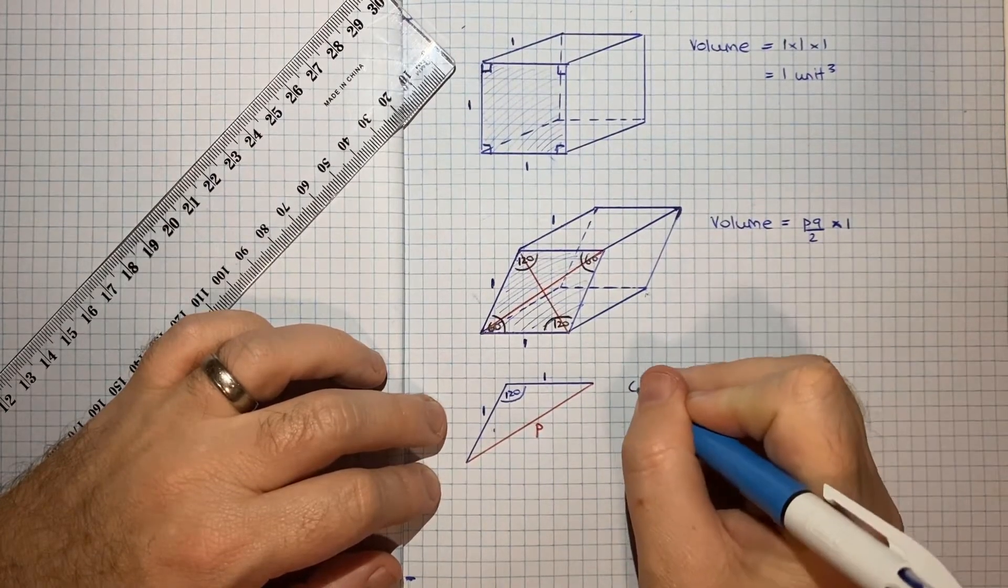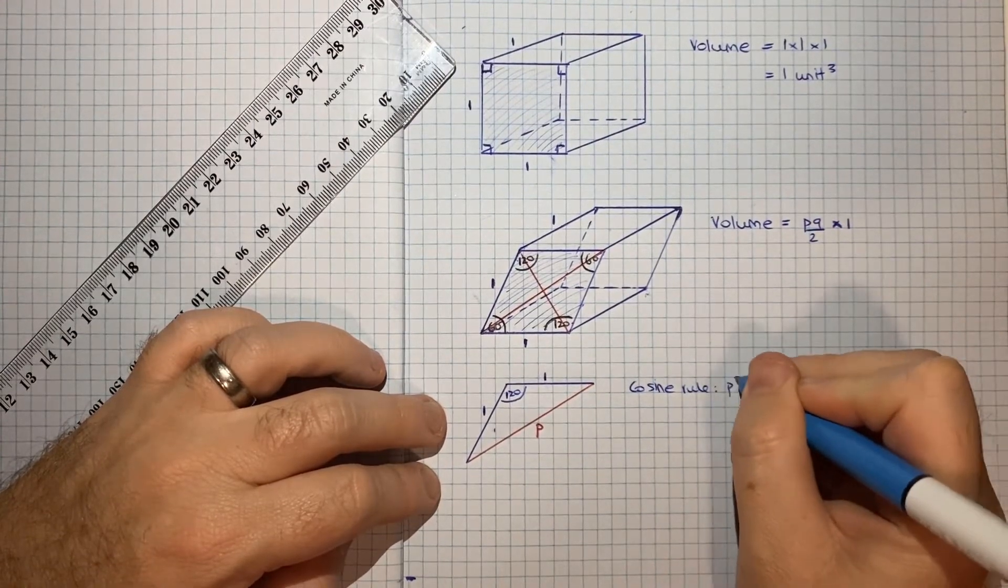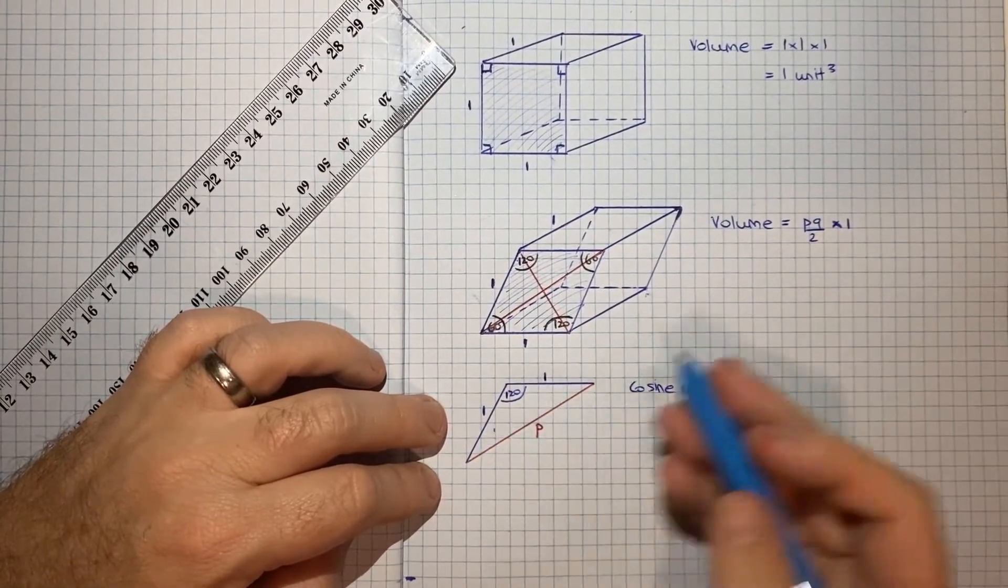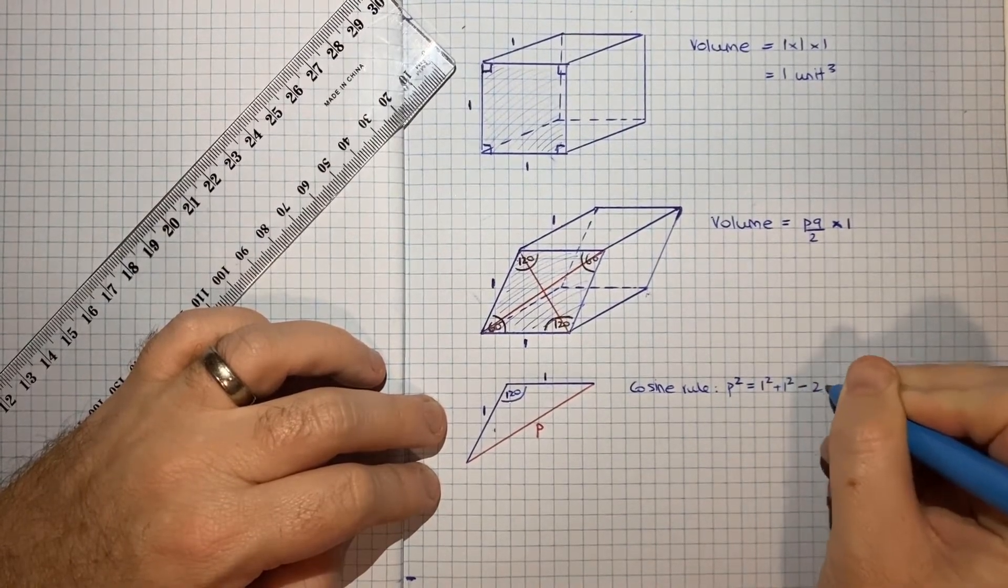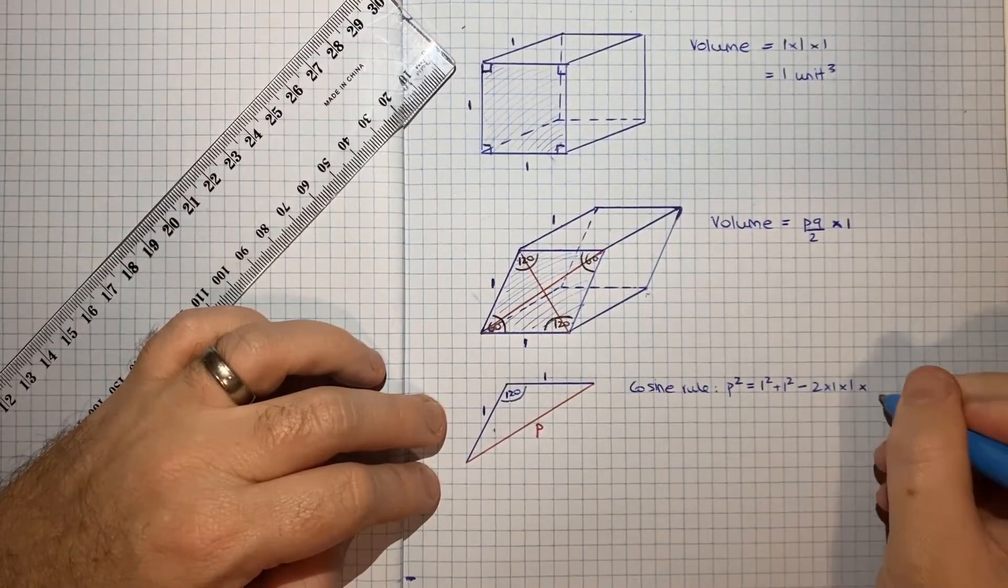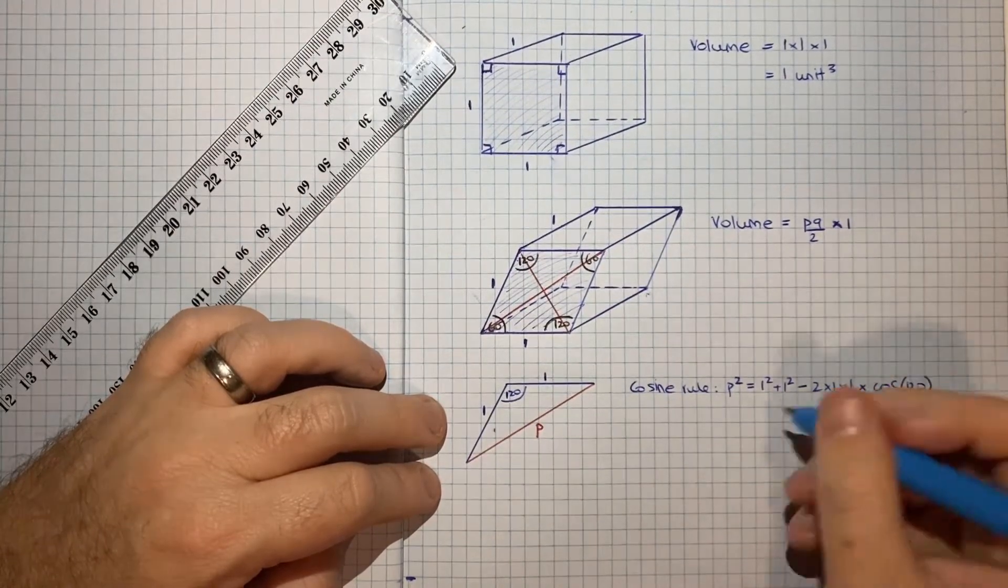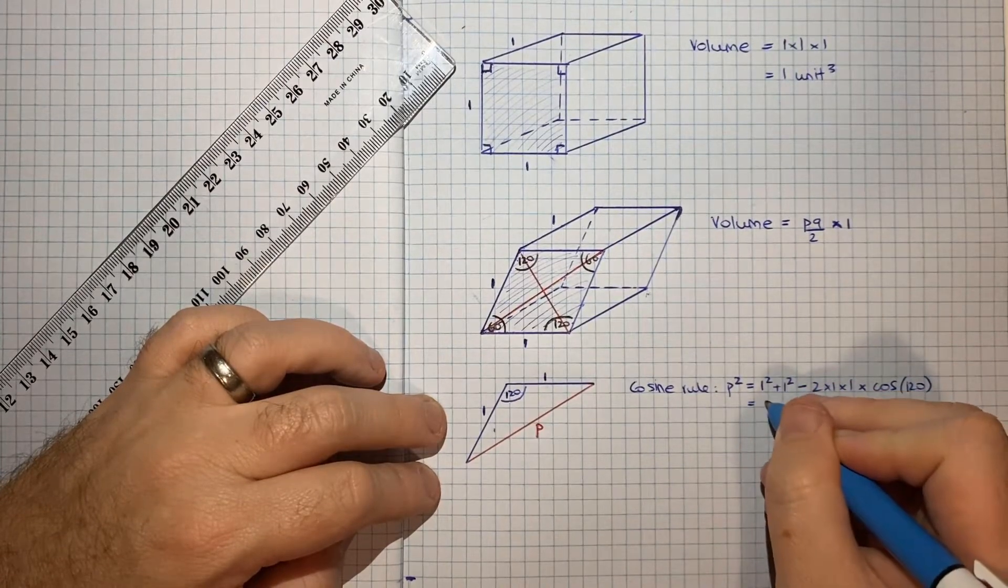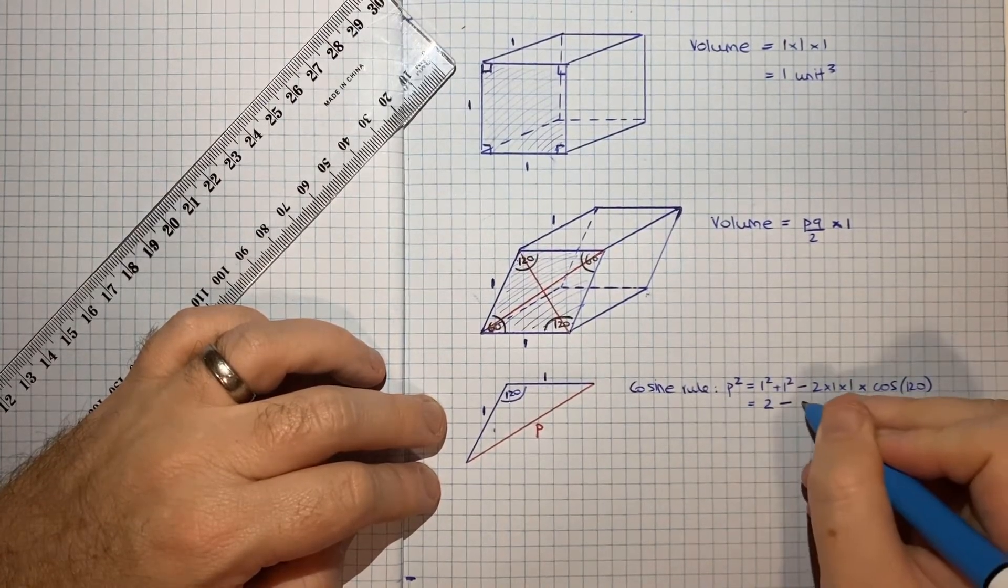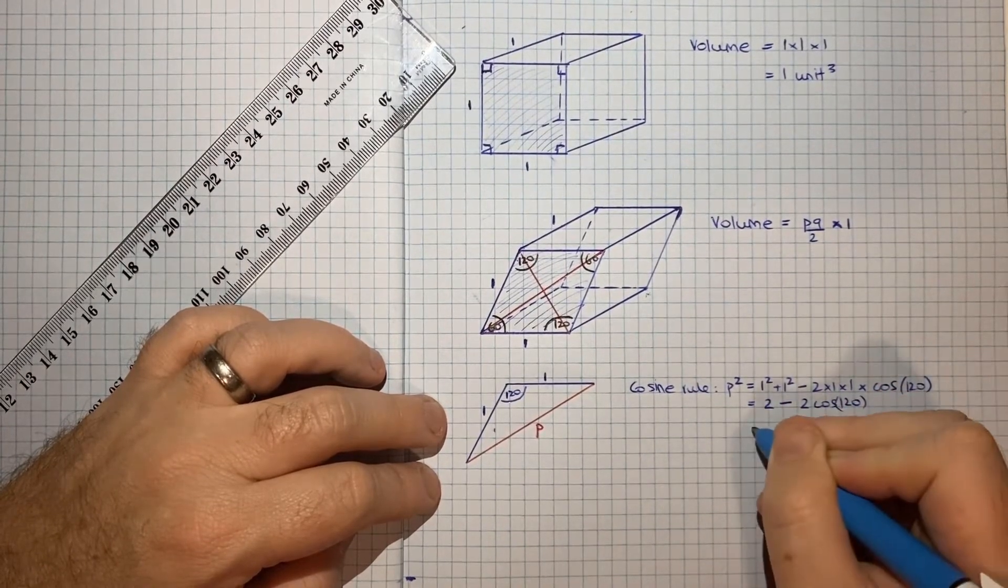And now if I want to find P, I can use the cosine rule, such that P squared would be equal to 1 squared plus 1 squared minus 2 times 1 times 1 times the cosine of the opposite angle, 120. So that's going to be equal to 1 plus 1 is 2 minus 2 cos 120.